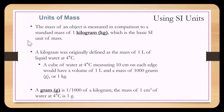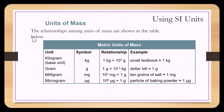The mass of an object is measured in comparison to the standard mass of one kilogram, which is the base SI unit of mass. A kilogram was originally defined as the mass of one liter of water at four degrees Celsius. A gram is one thousandth of a kilogram, and the mass of one cubic centimeter of water at four degrees Celsius is one gram. Common examples: one textbook is about one kilogram, a dollar bill weighs about one gram, ten grains of salt weigh about one milligram, and a particle of baking powder is about one microgram.